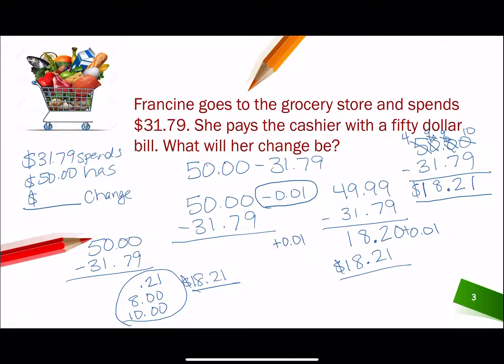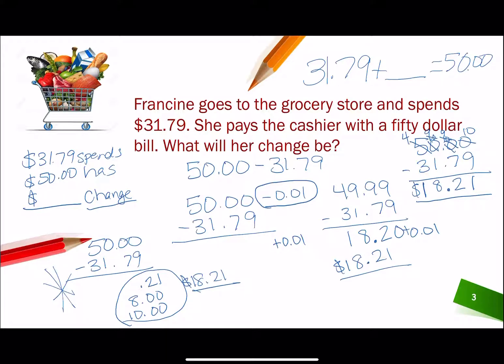You have to think about what you're trying to find out. We wanted to know the change in both of these problems, so it's a subtraction problem. Or you could turn it into an addition problem and say $31.79 plus some number equals $50, which is what you're doing when you count up. Alright, that's how to find how much change.